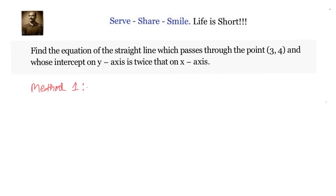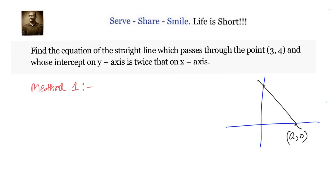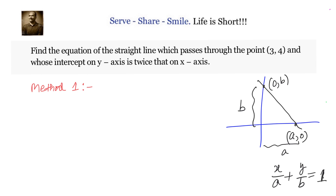We can do this in more than one method. In the first method, we'll directly use the double intercept form of the equation of a straight line. When we have two intercepts given — x-intercept is a and y-intercept is b — the equation is x/a + y/b = 1. Here we know the relation between the intercepts: b = 2a, so we write x/a + y/2a = 1.